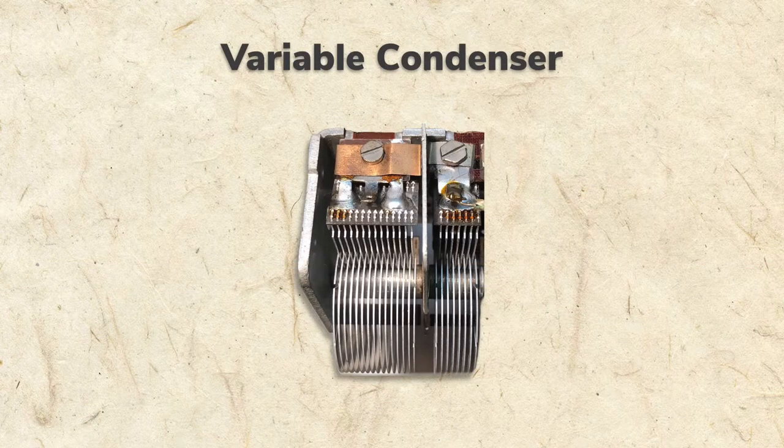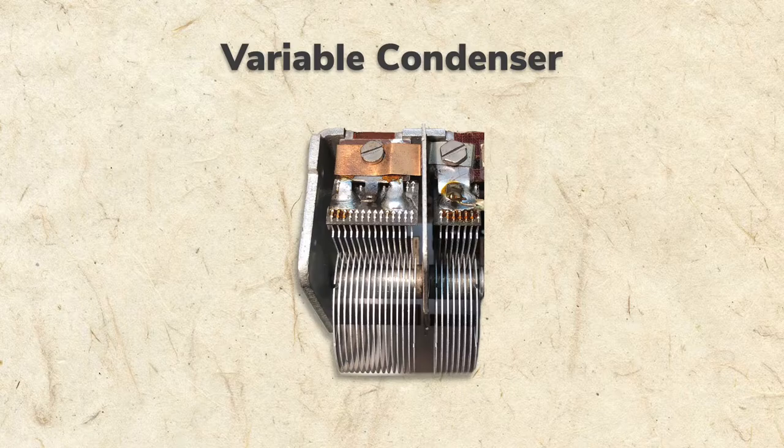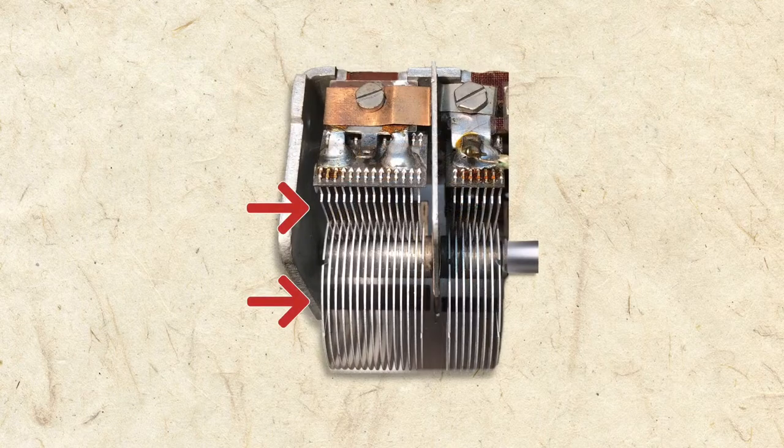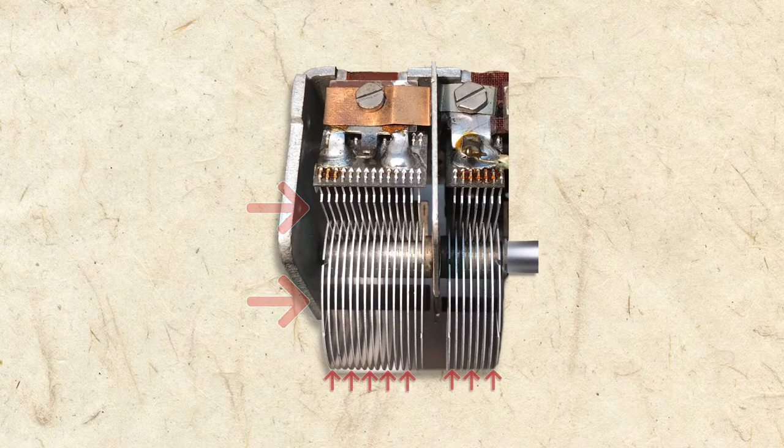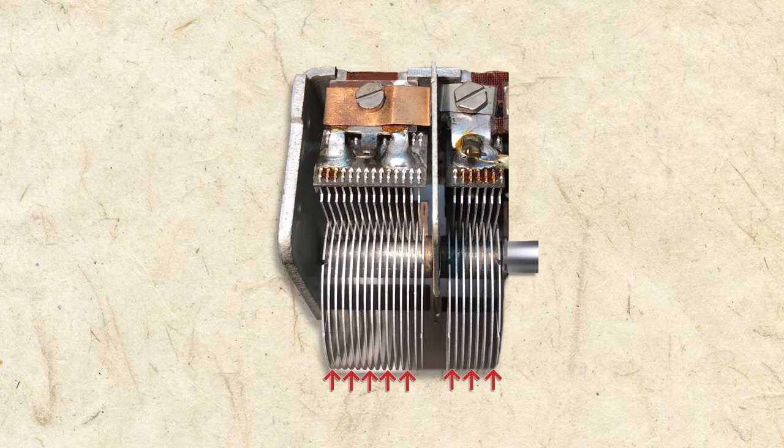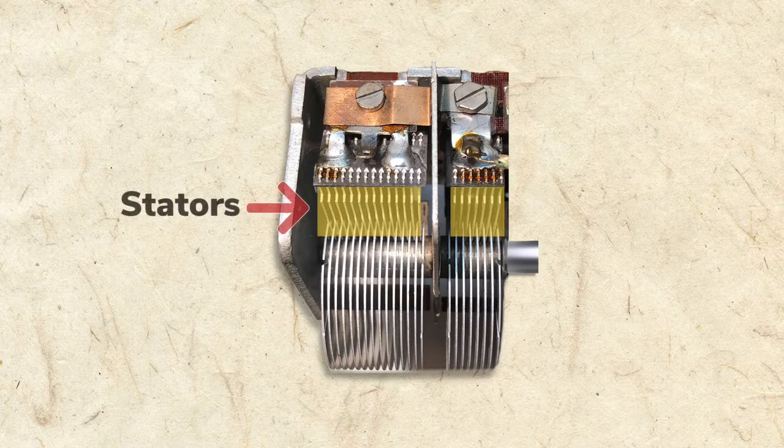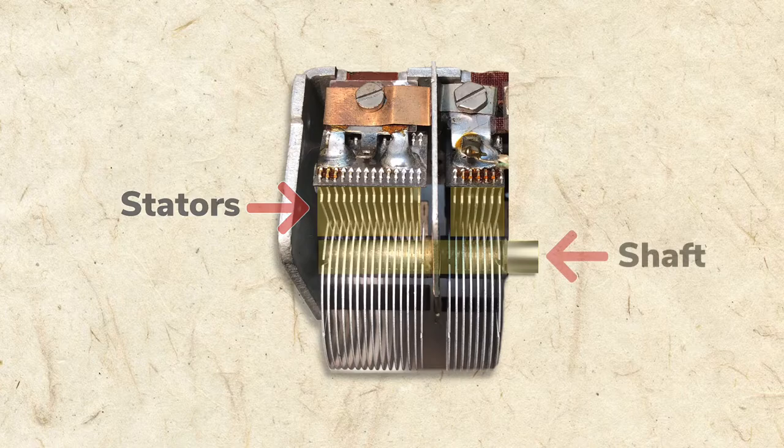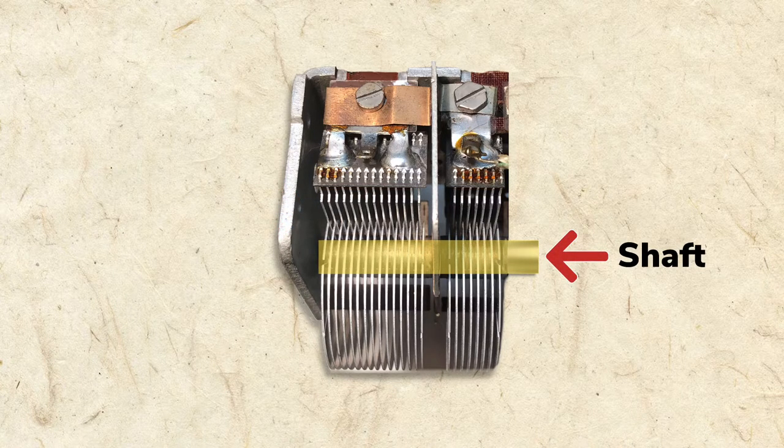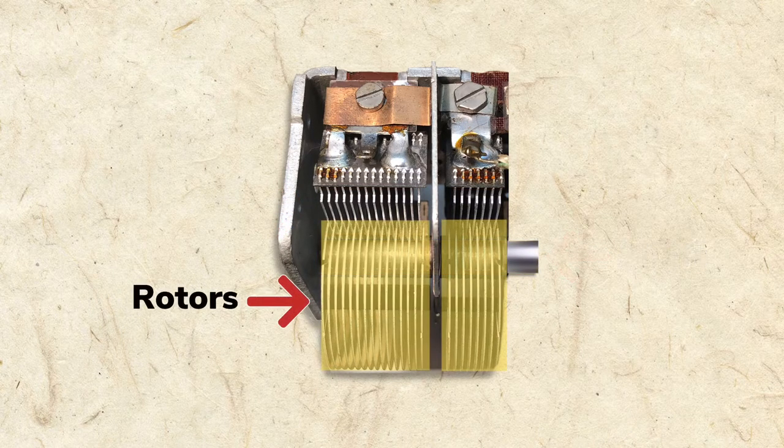The variable condenser looks different than the other capacitors in the radio, but it does have the same basic elements. The metal plates are conductors, and the air gaps are the insulator. Two sections of plates stay in a fixed position. These are called the stators. The other two sections of plates are attached to a rotating shaft. These are called the rotors.